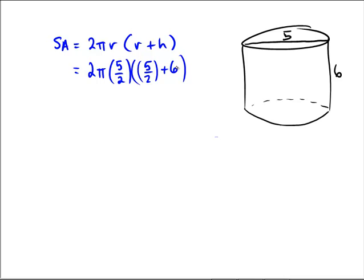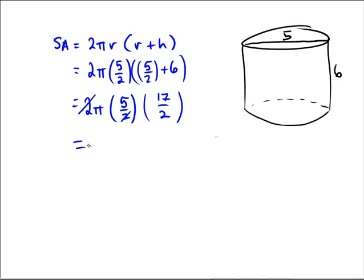The height is 6. So we have 2 × π × (5/2) × (5/2 + 12/2). That gives 5/2 + 12/2 = 17/2. After the 2's reduce, we get 5 × 17 = 85. So the final answer is (85/2)π.